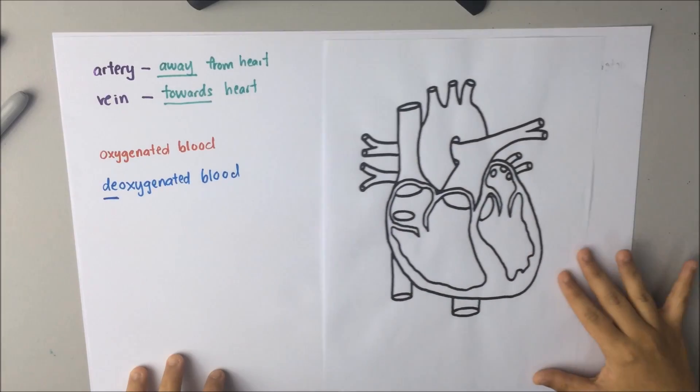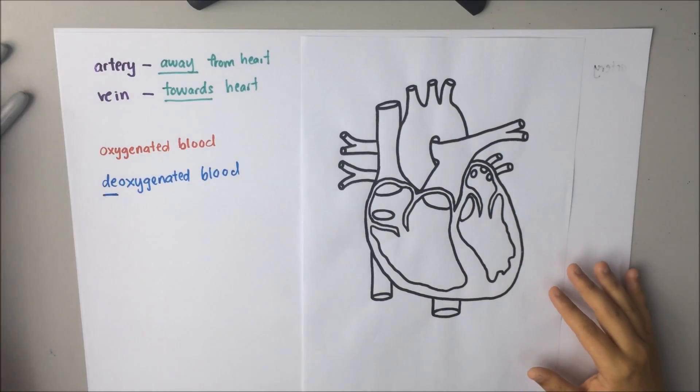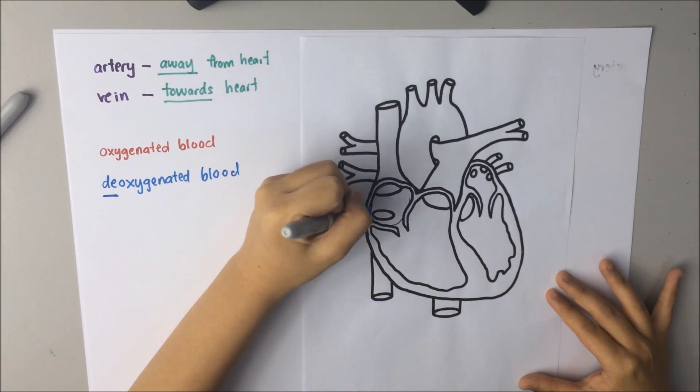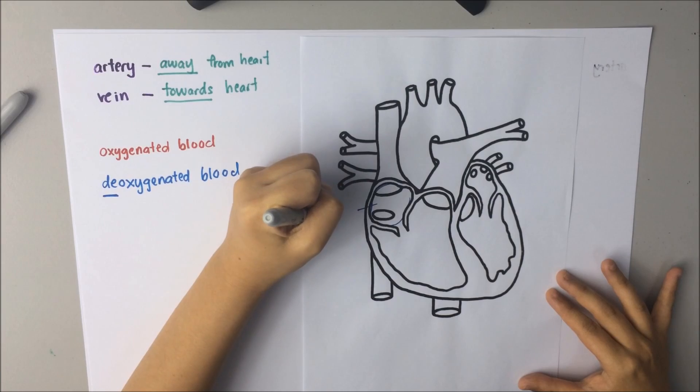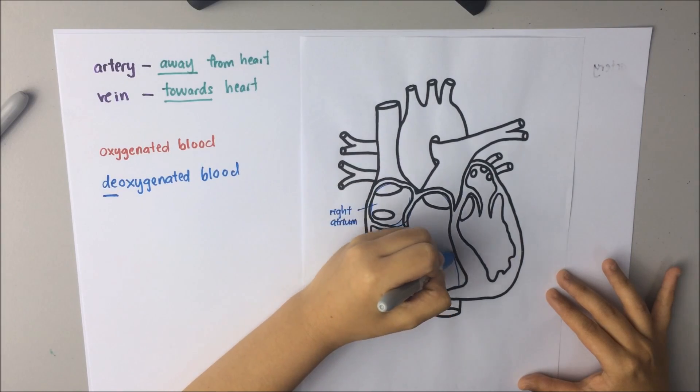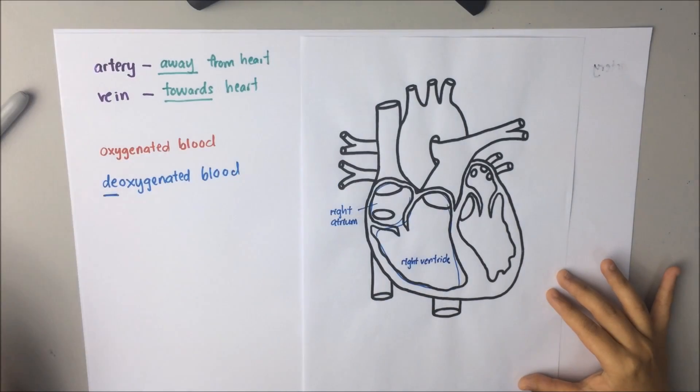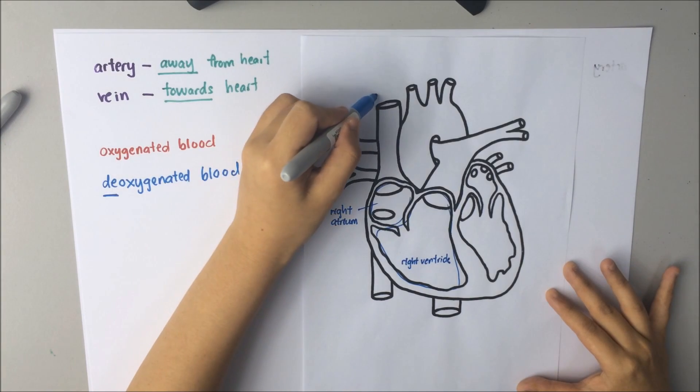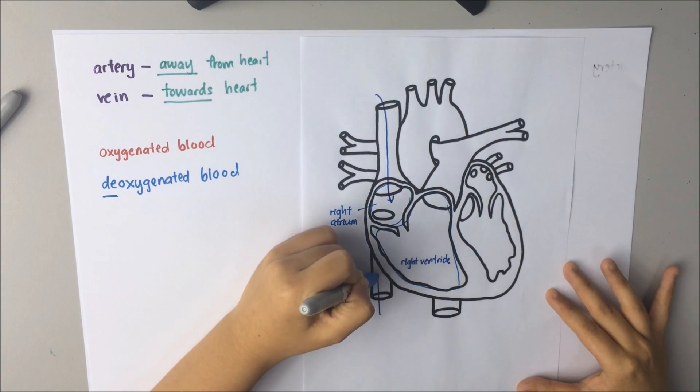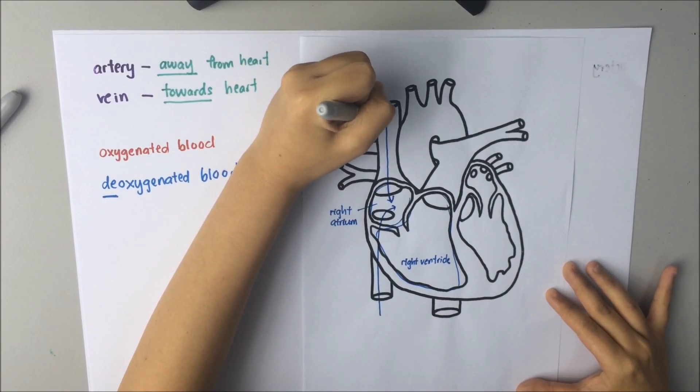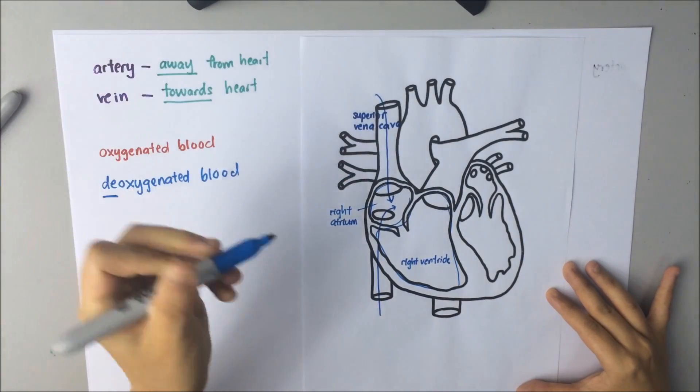Now let's look at the structure of the heart closely. Now let's label the chambers of heart we have learnt before just now. This is right atrium, right ventricle. Deoxygenated blood returns to the right side of the heart through superior vena cava and also inferior vena cava. These are the big veins in our body. Remember, vein towards the heart.